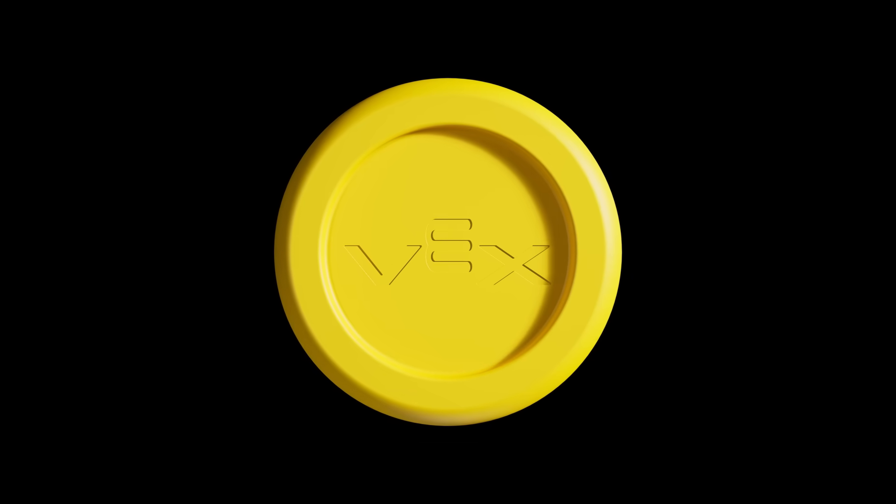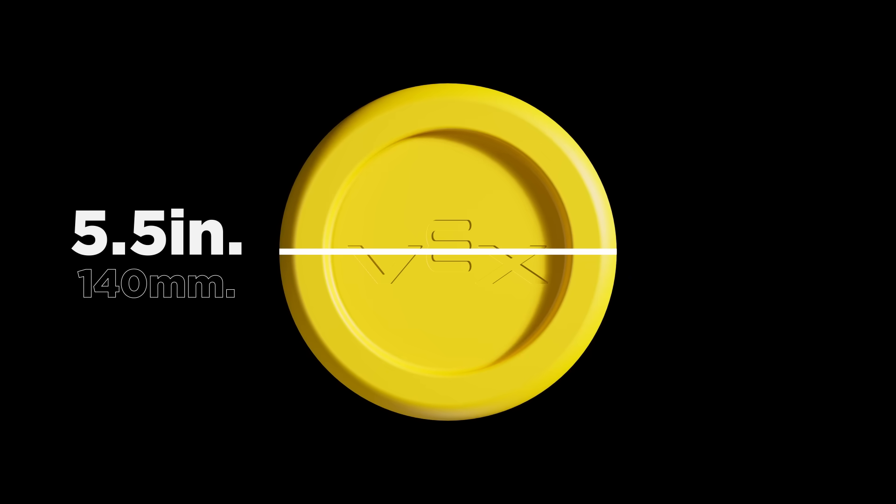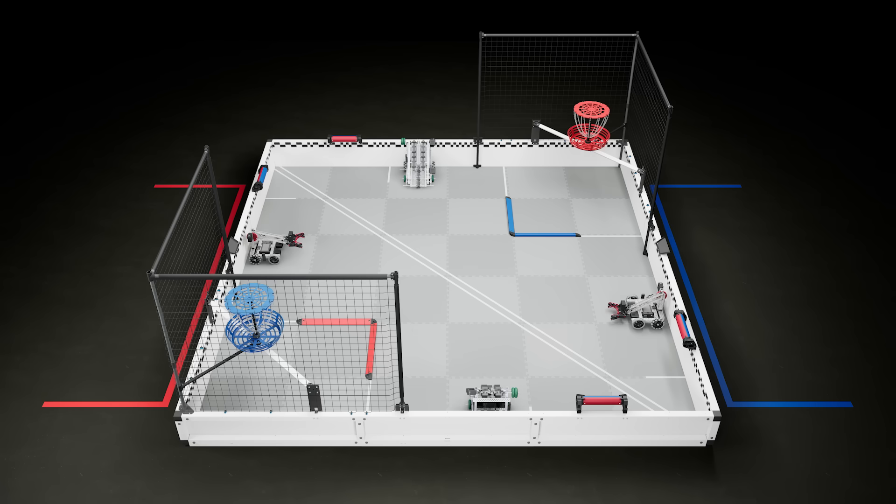The primary game objects in VRC Spin-Up are yellow foam discs. Discs are 140mm in diameter and 20mm thick. There are 60 discs total in a Spin-Up match: 38 that start on the field, two preloads per robot, and seven match loads per alliance.